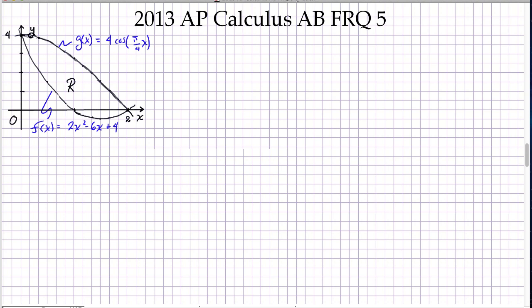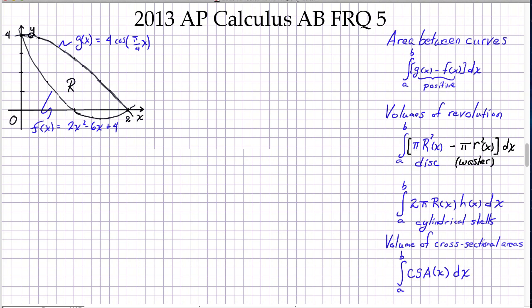We're given two functions, F and G, that bound a region R. We have to find the area, then rotate that region R around an axis to get a volume of revolution, and then use R as the base for a solid built out of cross sections. To handle those various tasks, these are the sorts of formulas that we need, and let's start with A.